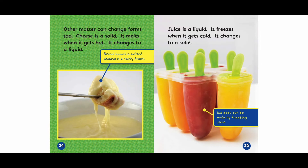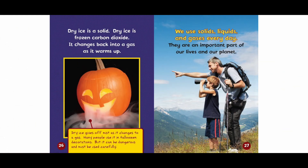Other matter can change forms too. Cheese is a solid — it melts when it gets hot and changes to a liquid. Bread dipped in melted cheese is a tasty treat. Juice is a liquid — it freezes when it gets cold and changes to a solid. Ice pops can be made by freezing juice. Dry ice is a solid made of frozen carbon dioxide. It changes back into a gas as it warms up, giving off mist. Many people use it in Halloween decorations, but it can be dangerous and must be used carefully.